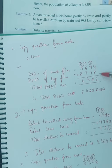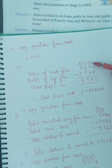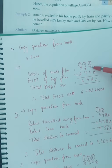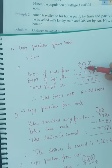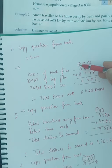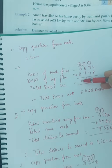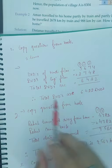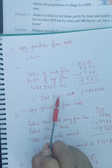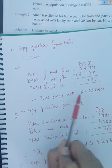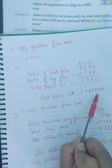Let's check the addition: 4 plus 8 is 12, write 2 carry 1. Then 7 plus 1 carry is 8, and 4 plus 8 is 12, carry 1 again. Then 6 plus 1 is 7, and 7 plus 7 is 14, carry 1. Then 3 plus 1 is 4, plus 2 equals 6. So total DVDs are 6,422.